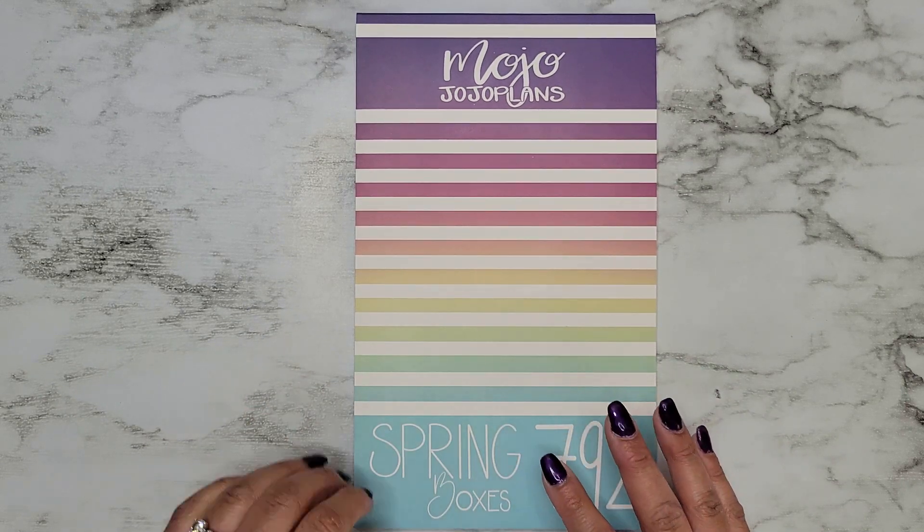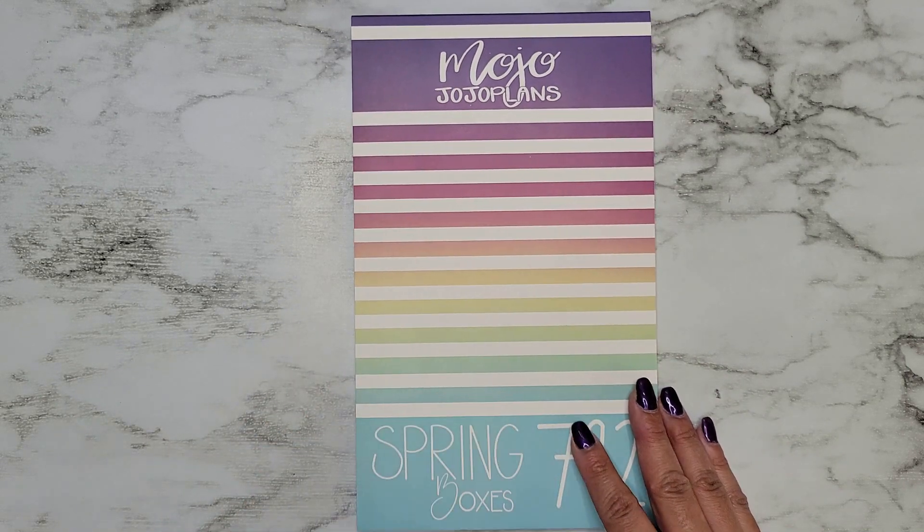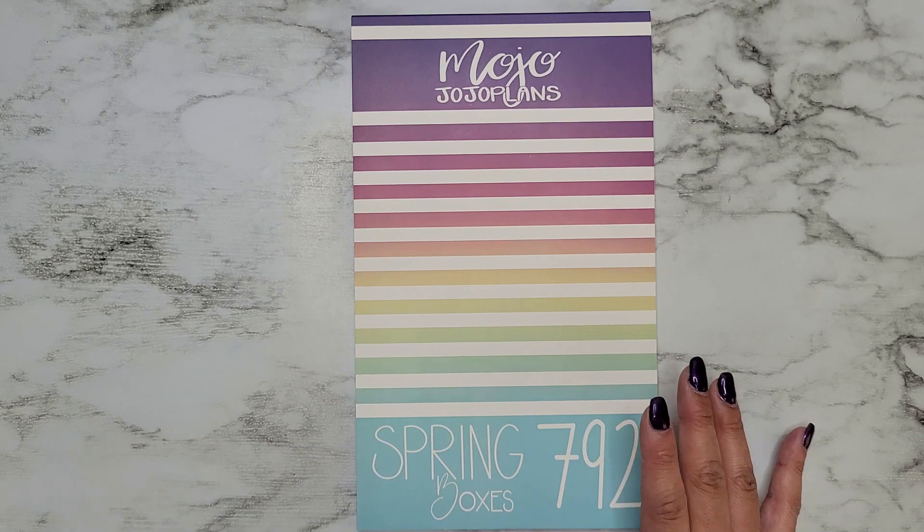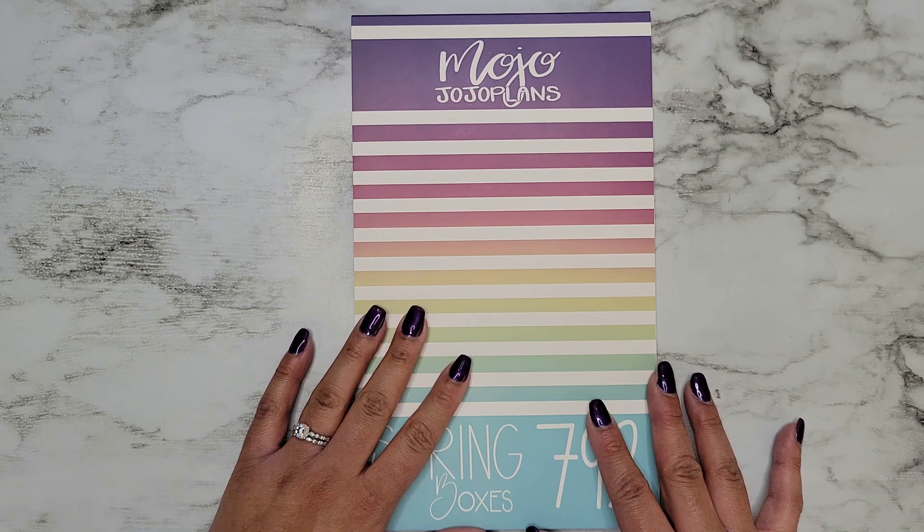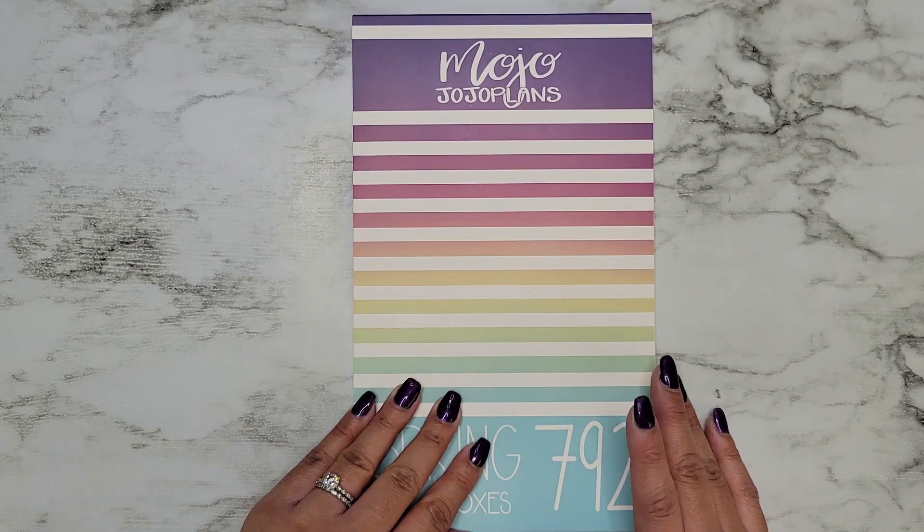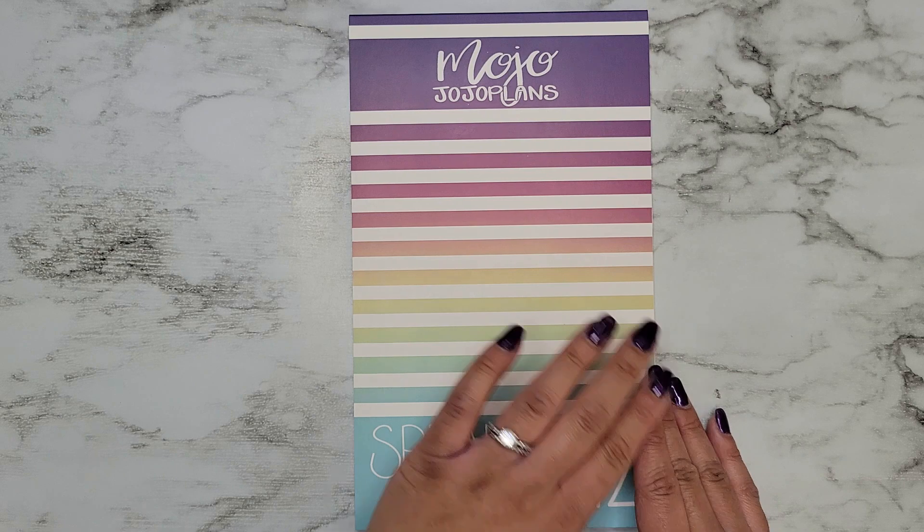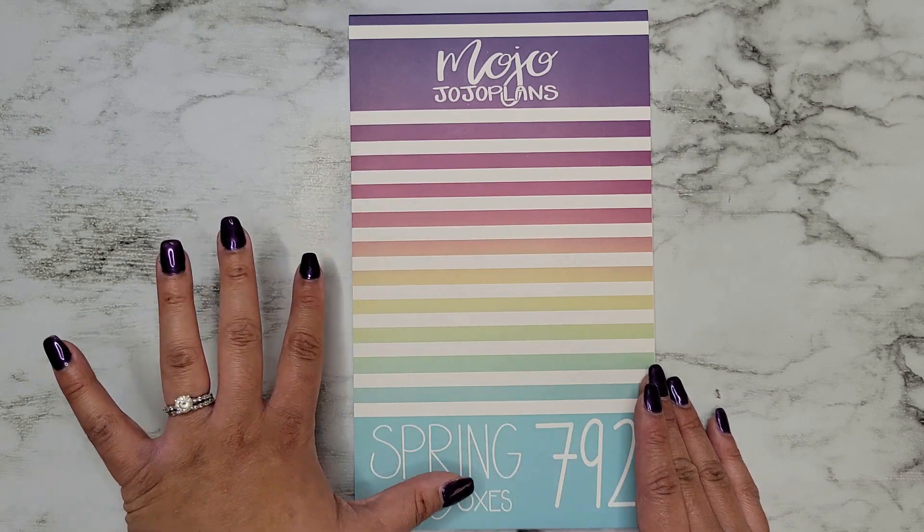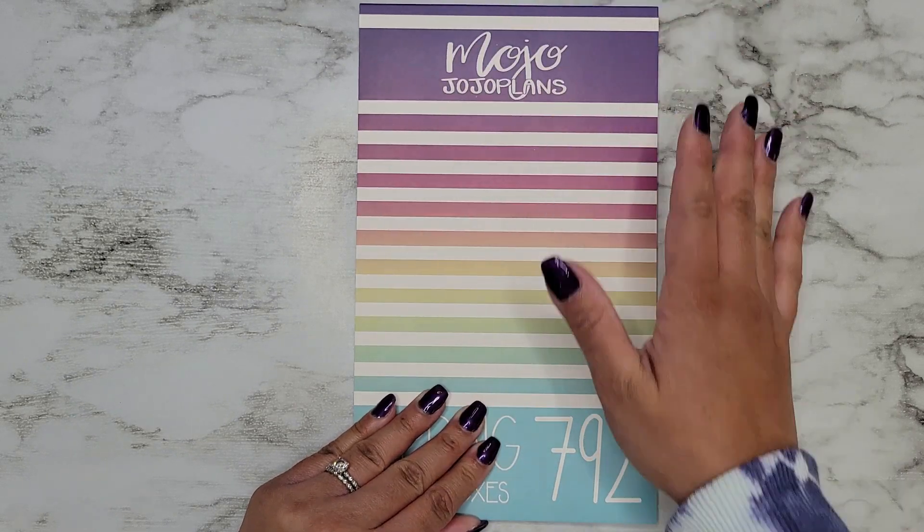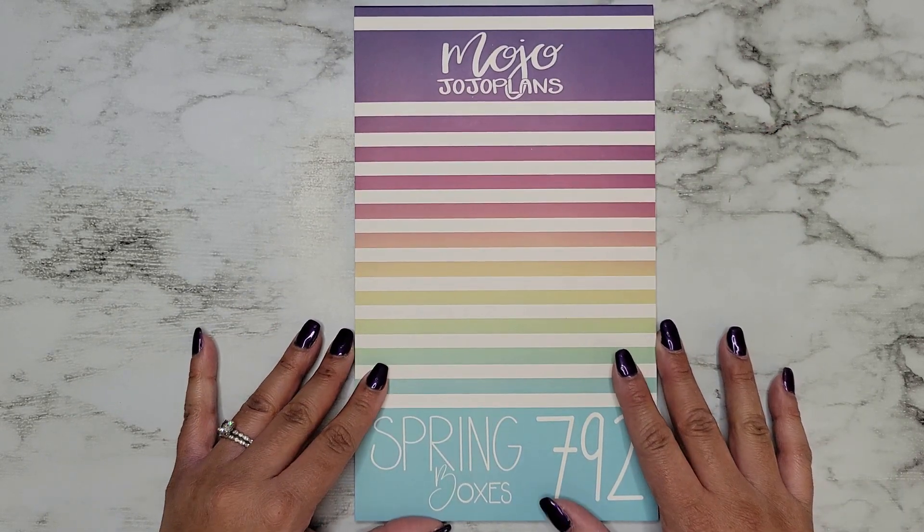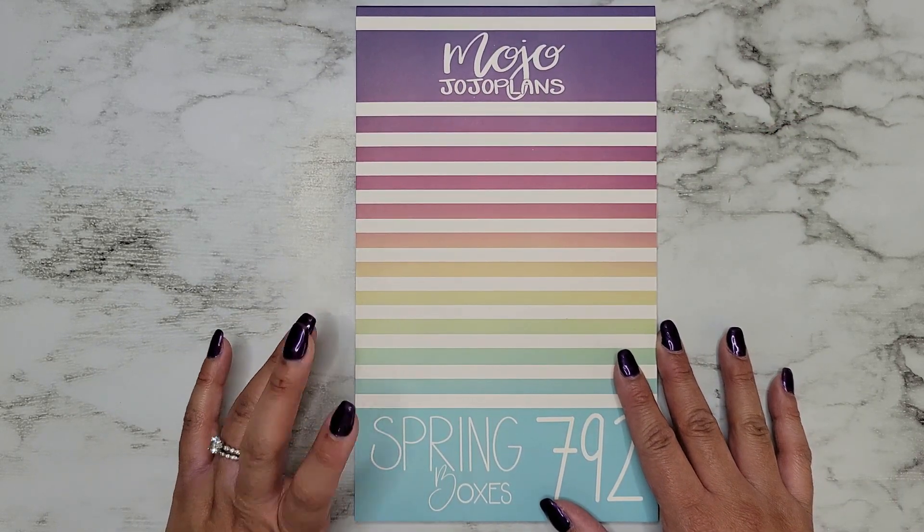On my website, www.mojo-jojoplans.com. I will make sure to leave all the details. It's $20 plus shipping. Usually if you buy more than one book it's going to be priority shipping. Other than that, it's usually $5 for first class for the U.S.